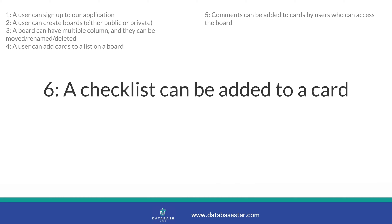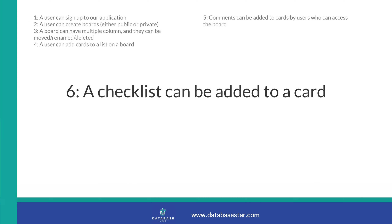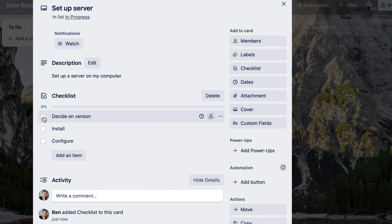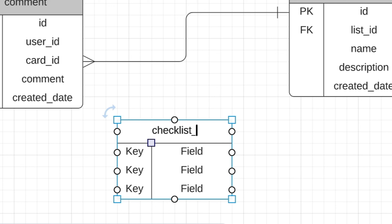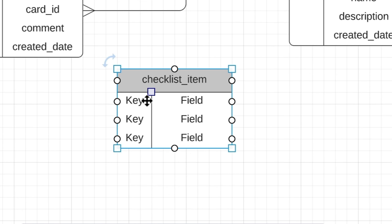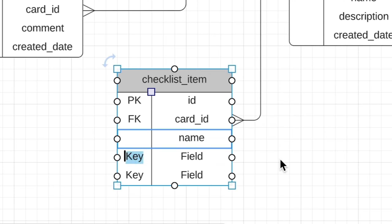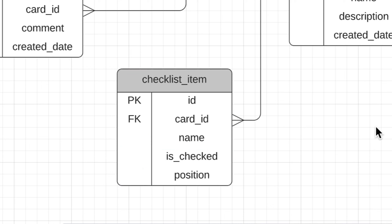The next requirement is the ability to add checklist items to a card — a list of things that can be checked off. We'll add a new table called checklist item. Within this table we have an ID field and a card ID field so we know what card the checklist item is related to. We'll add a name column for the item, an isChecked column storing true or one for checked and false or zero for not checked, and a position column indicating the order of the checklist item. Requirement number six is now met.